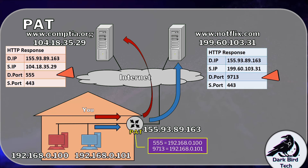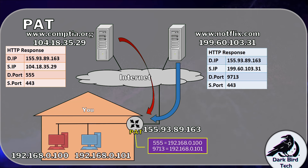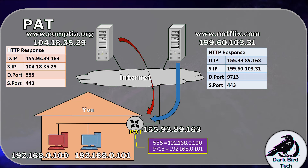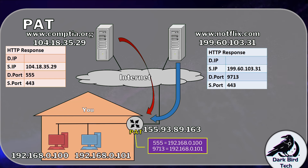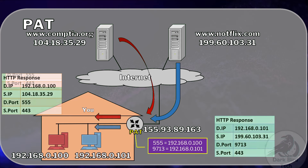It's the web services responding to both you and that other person. The responses now make their way back to the home router, and the home router is able to tell which private source IP address made the original request because it kept track of the port number. For your request for CompTIA it was source port 555, so when that response comes back and the home router sees it in the destination port, it knows that was for 192.168.0.100. And for the other person, 9713 maps to 192.168.0.101. So now it can strip out the destination IP addresses from those fields, put in the correct private ones, and those private responses come back onto the LAN nice and smoothly.